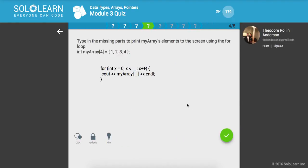Having the missing parts to print my array's elements to the screen using the for loop. So int is less than, what is it going to be? Less than 4. And we want to print out my array of x. Make sure I got that. Cool.